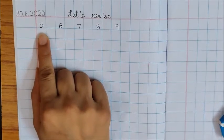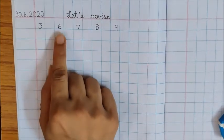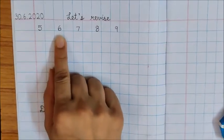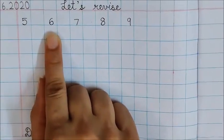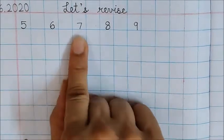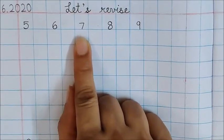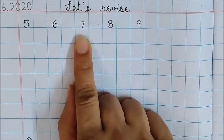Now keep your pointer finger below this number and tell me what number is this? Yes, this is number 5. Keep your finger below this number. What is this number? Correct. 6. Tell me this number. Good. 7.